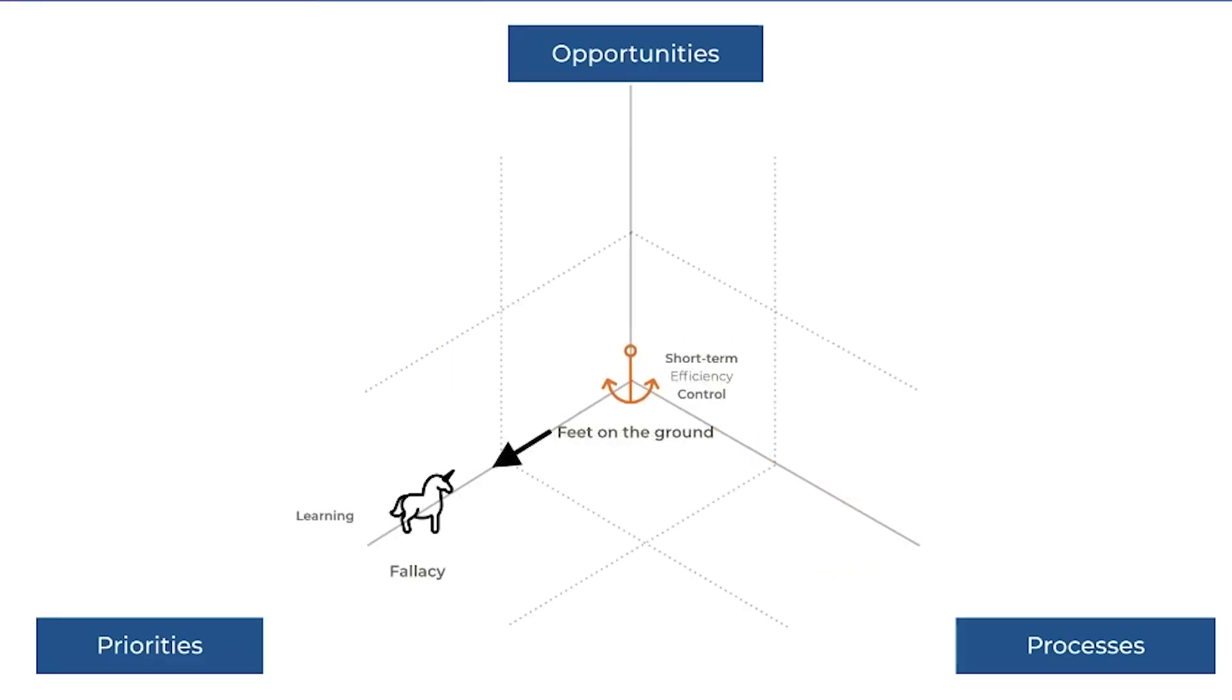The other interesting thing is that a move in the third direction is what we would call a fallacy: this idea of controlling over the short term but trying to learn. Obviously, this is a fallacy because there isn't much to learn when things are constrained in that way.